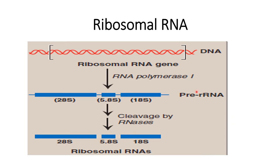In eukaryotes, RNA polymerase 1 is used for the synthesis of precursor or pre-ribosomal RNA. This pre-ribosomal RNA gives rise to mature 28S, 5.8S, and 18S ribosomal RNAs. All of this processing takes place in the nucleolus, where small nucleolar RNAs associate with specific proteins to form the snoRNP complex. The 5S species is synthesized and processed independently in eukaryotes.